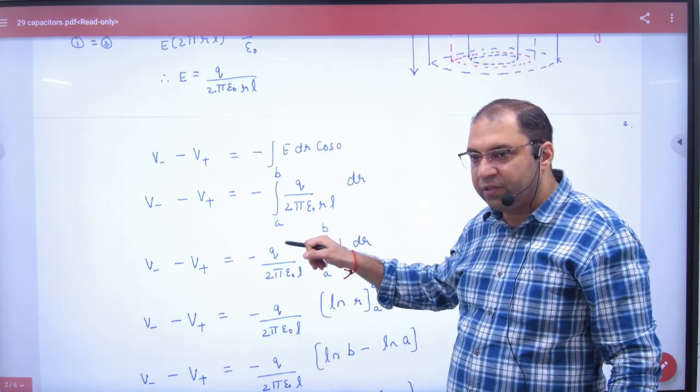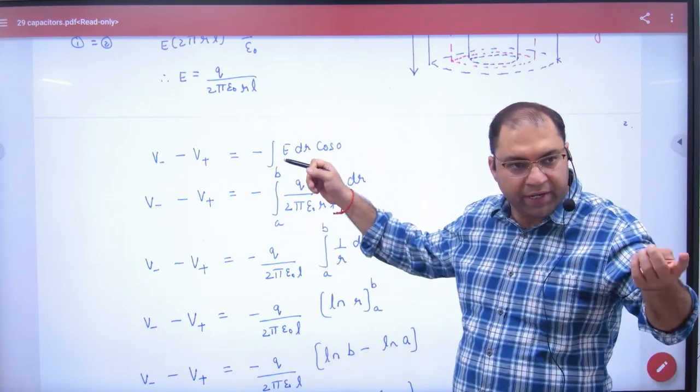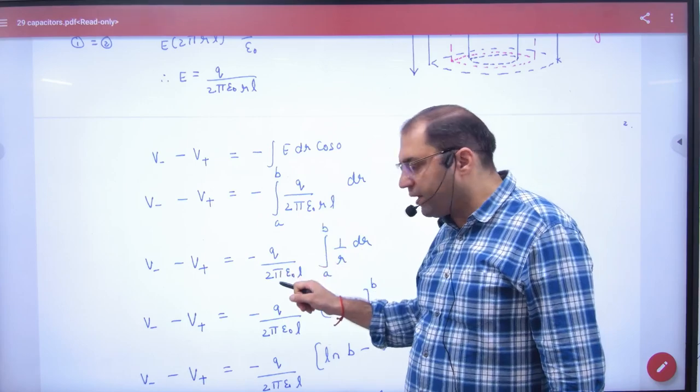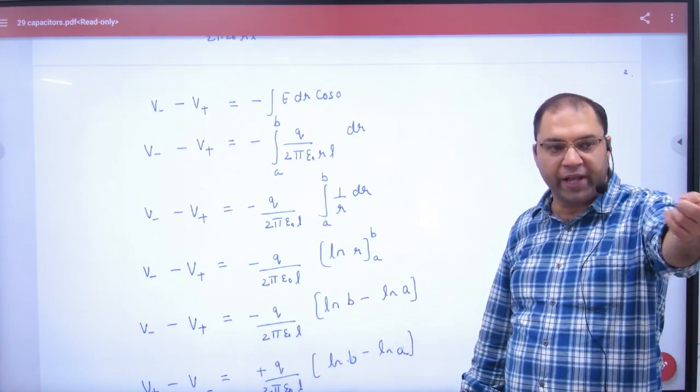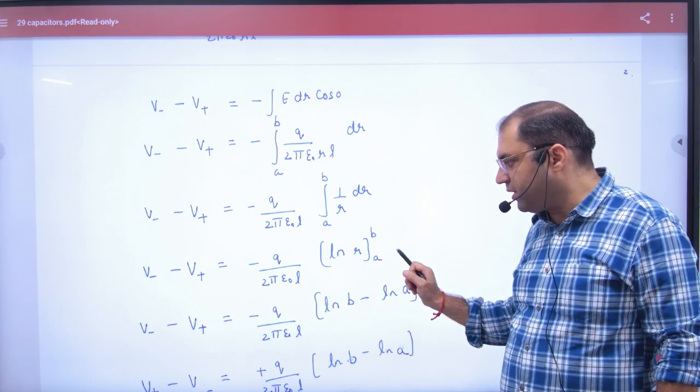And in radius A, integrate from A, constant, 1 by r dr. Integration of 1 by r dr is natural log of r. That's evaluated from B to A.